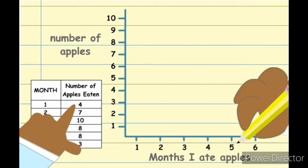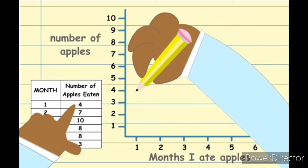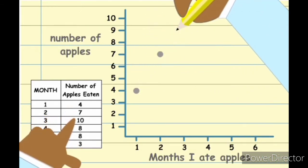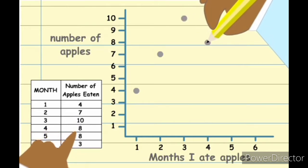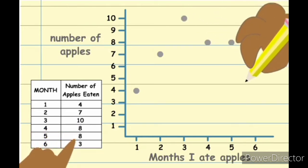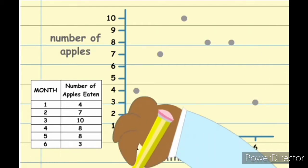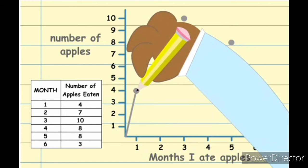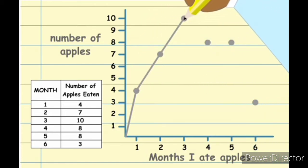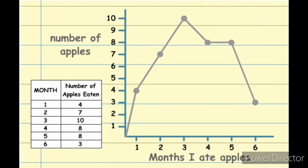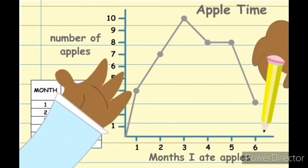When you plot the data on the right spot on the graph, you plot that point. Each point of the graph shows the number of apples I ate that month. Then connect them to see the line graph. Then add our title — Apple Time — and done! Our line graph is complete.